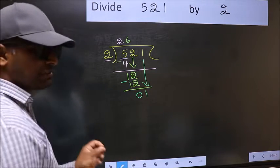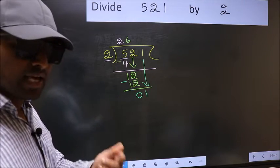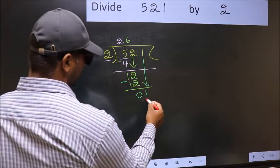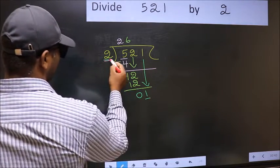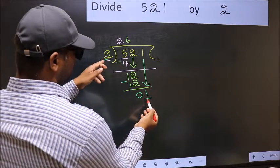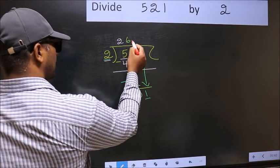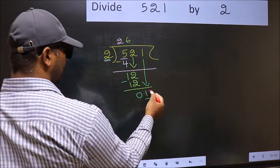After this step, the mistake happens. And the mistake is this. Here we have 1 and here 2. 1 is smaller than 2. So what many do is, they directly put a dot and take 0 here.